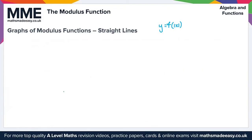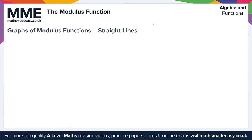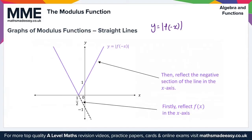For y equals the modulus of f of minus x, we first reflect f(x) in the y-axis and then reflect the negative section of the line in the x-axis, giving us the final graph. That covers everything for graphs of modulus functions for straight lines.